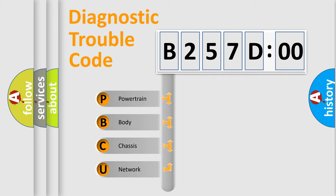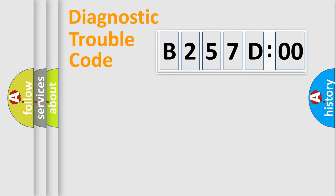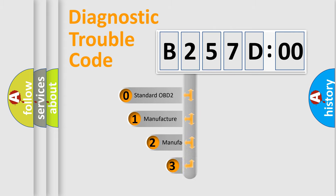We divide the electric system of automobile into four basic units: Powertrain, Body, Chassis, and Network. This distribution is defined in the first character code.